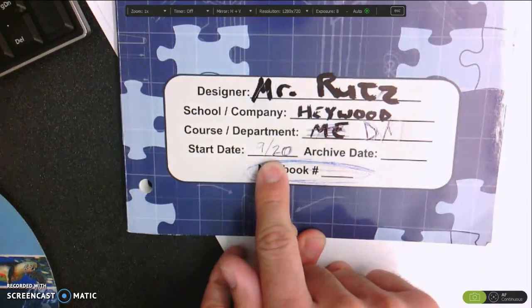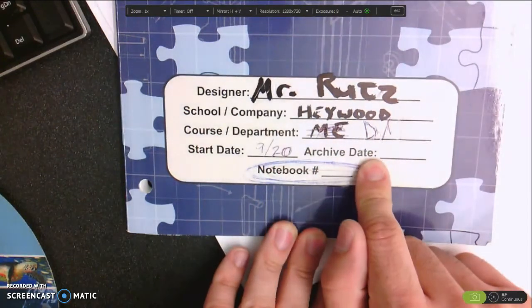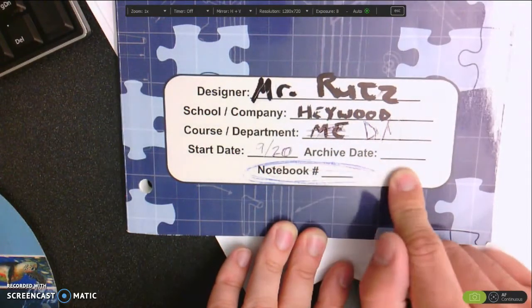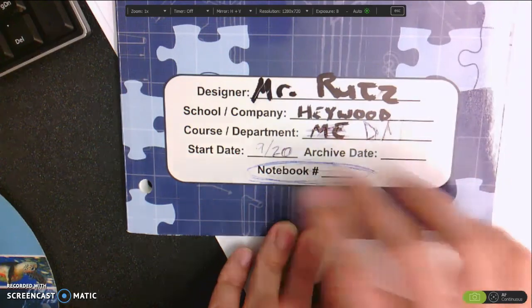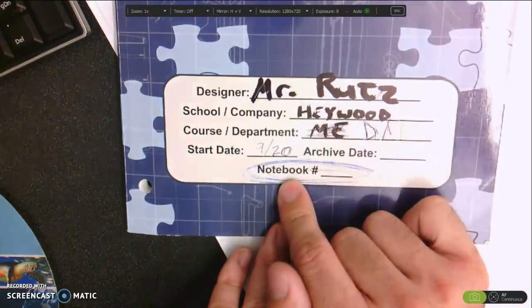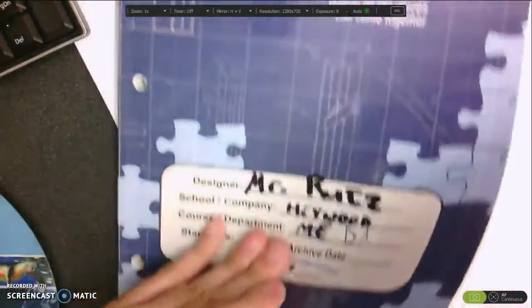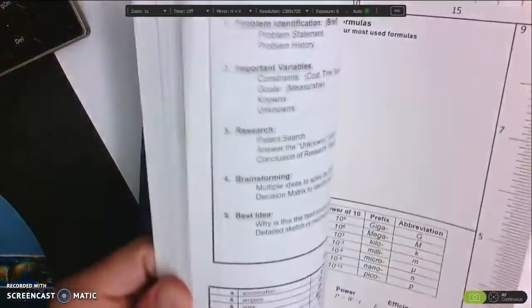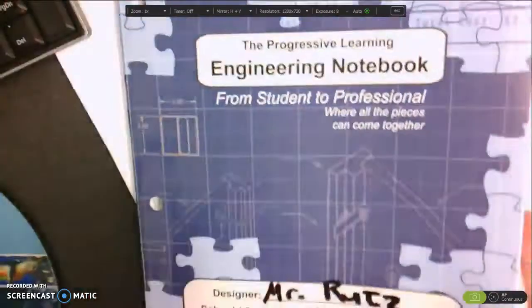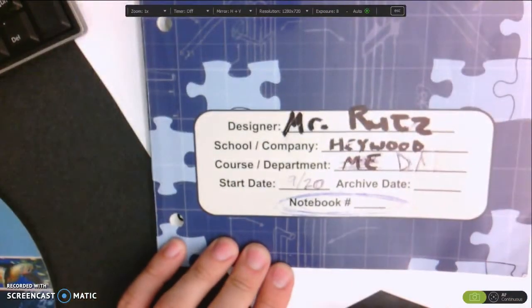Start date is when you start working on a project and archive date is when you are completely done using this, so it'll date the entire book. Notebook number is if you have a series of notebooks and you have a project so large that you need to fill up every single page, you would have multiple notebooks in a series.